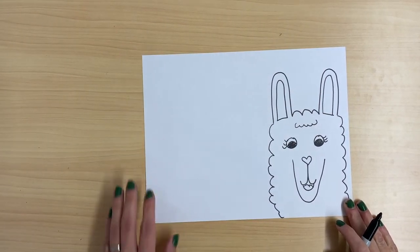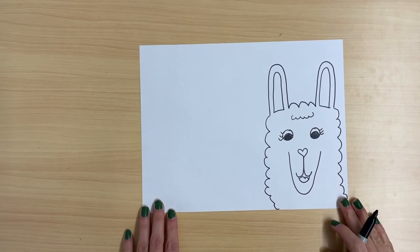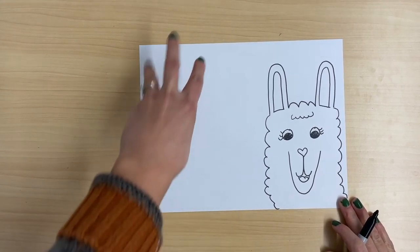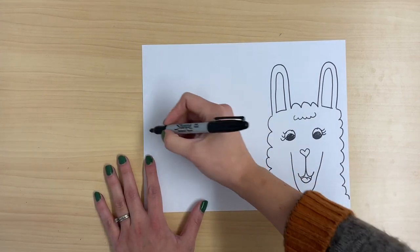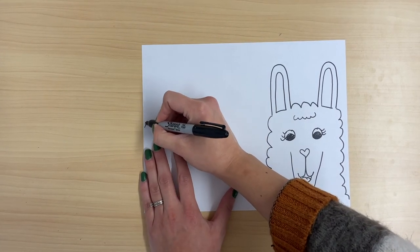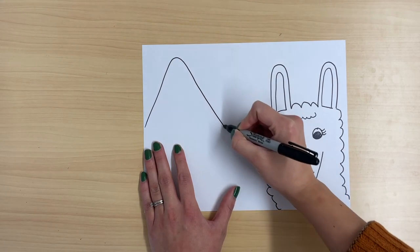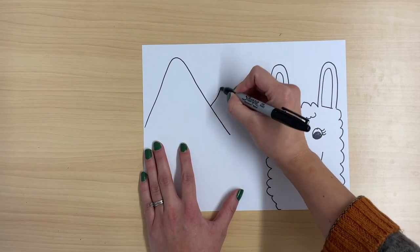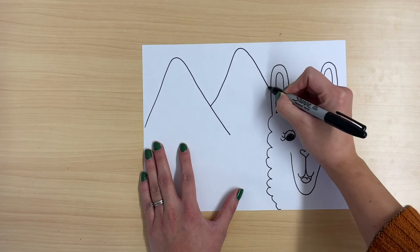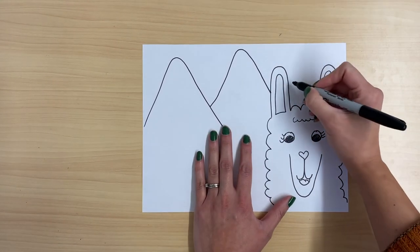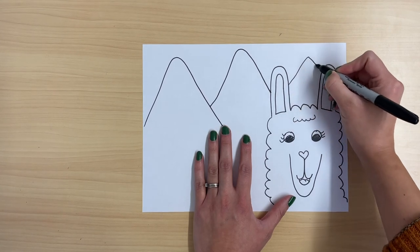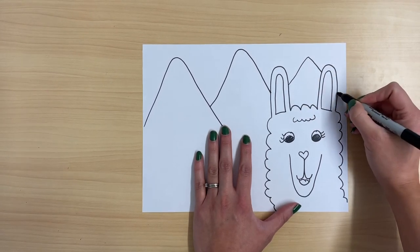Okay, the next thing we're going to do is add our background. Remember, llamas live in Peru and Peru has lots of big hills and mountains that cover the land. So to show that, I'm going to draw some mountain shapes like this, and the lines stop when they get to the llama because they're behind the llama. So they don't go over, they stop when they get to the lines I've already drawn.